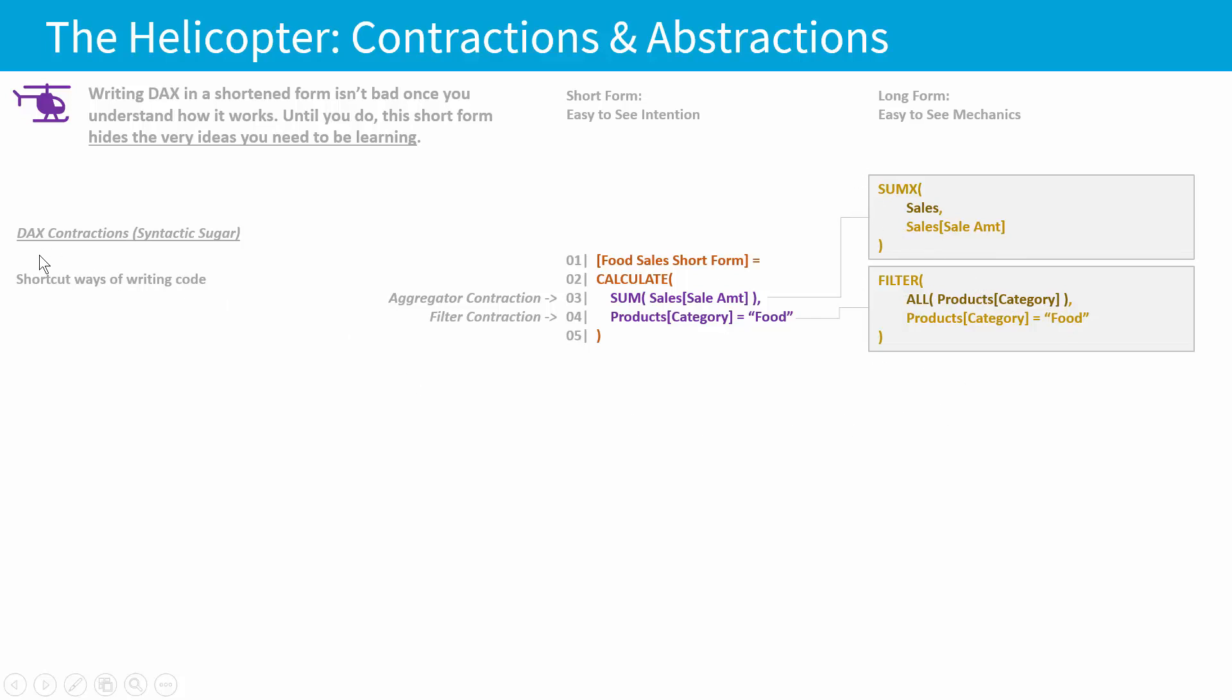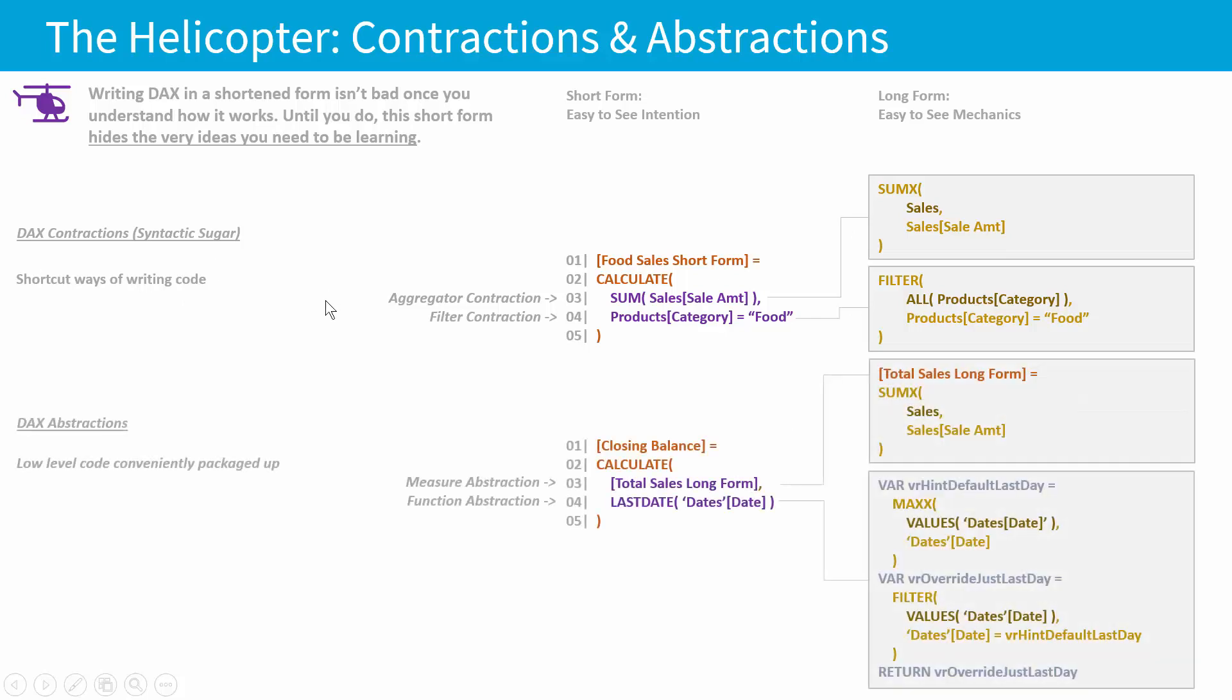So there's more than this. There's more than just contractions. There's also abstractions. Abstractions are ways of taking low-level code and conveniently packaging it up. That's not like a textbook definition of abstraction, but it's going to work for us right now. So for example, if we have a measure, which is maybe the closing balance, we might write something that looks like this, where we use a measure to say, hey, you know, I could write out this big long string of code right here that corresponds to the business idea of total sales, but why do that when I could just define a measure and then refer to the measure right here?